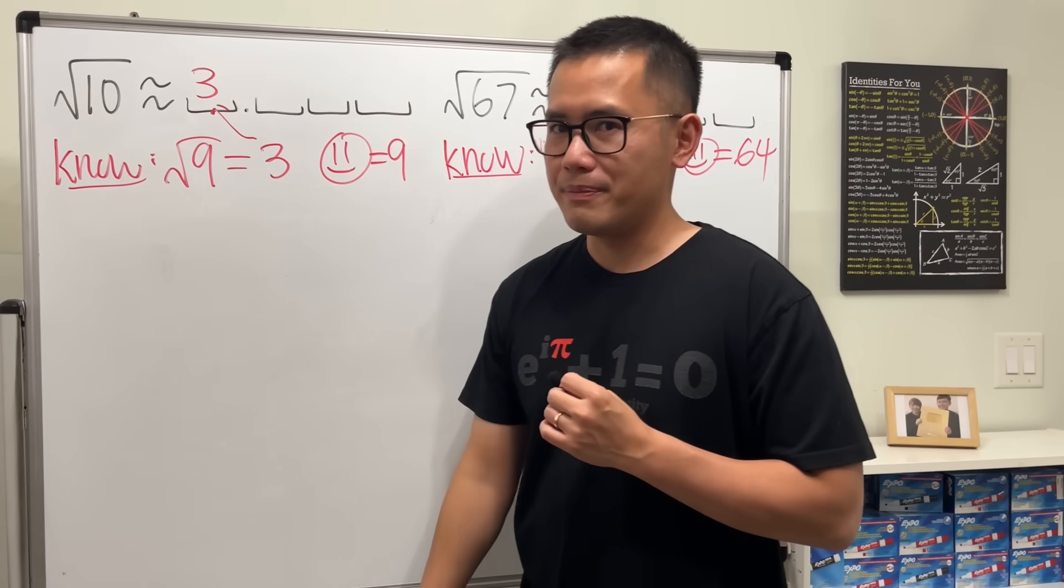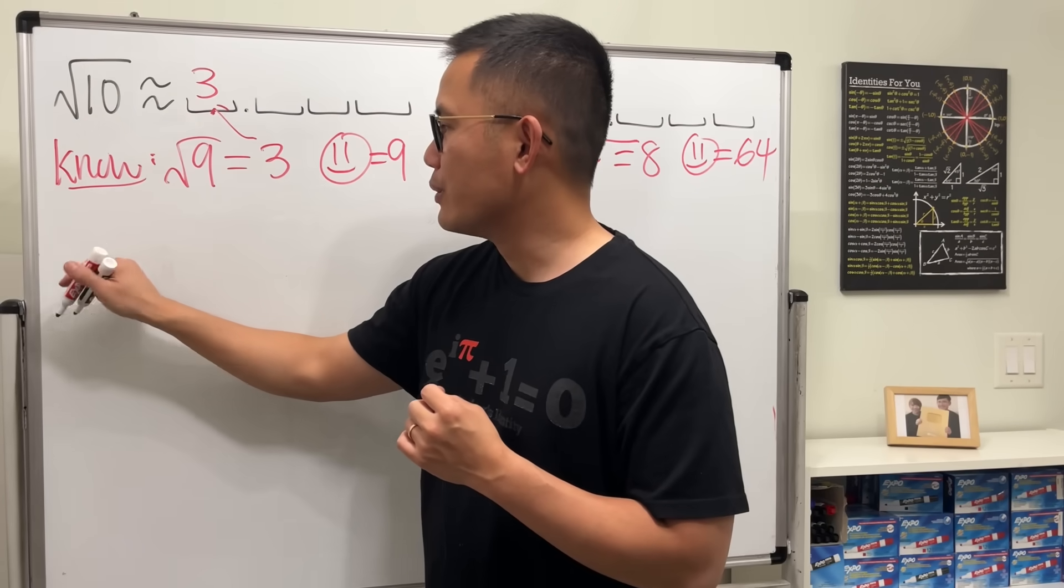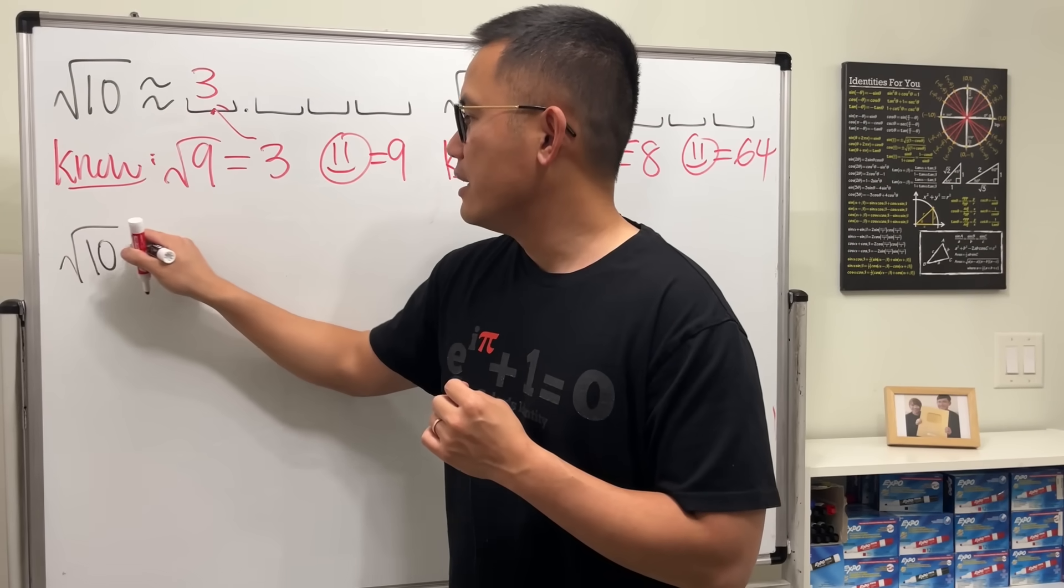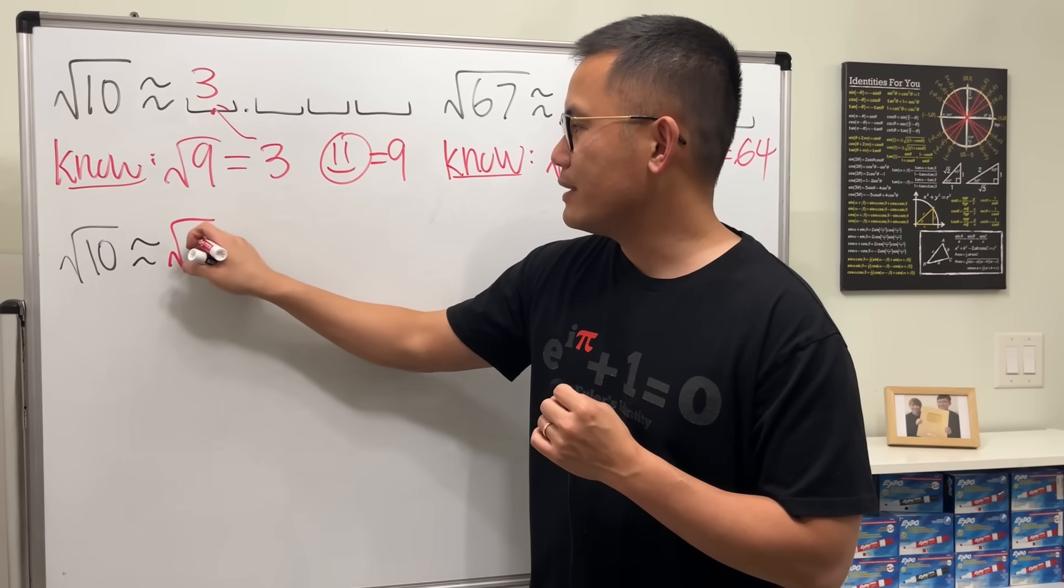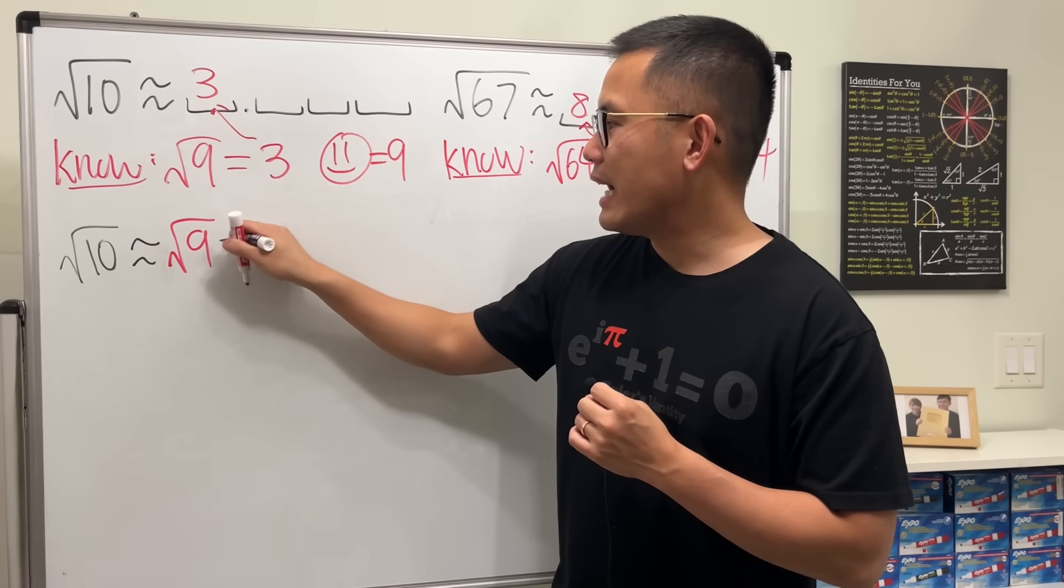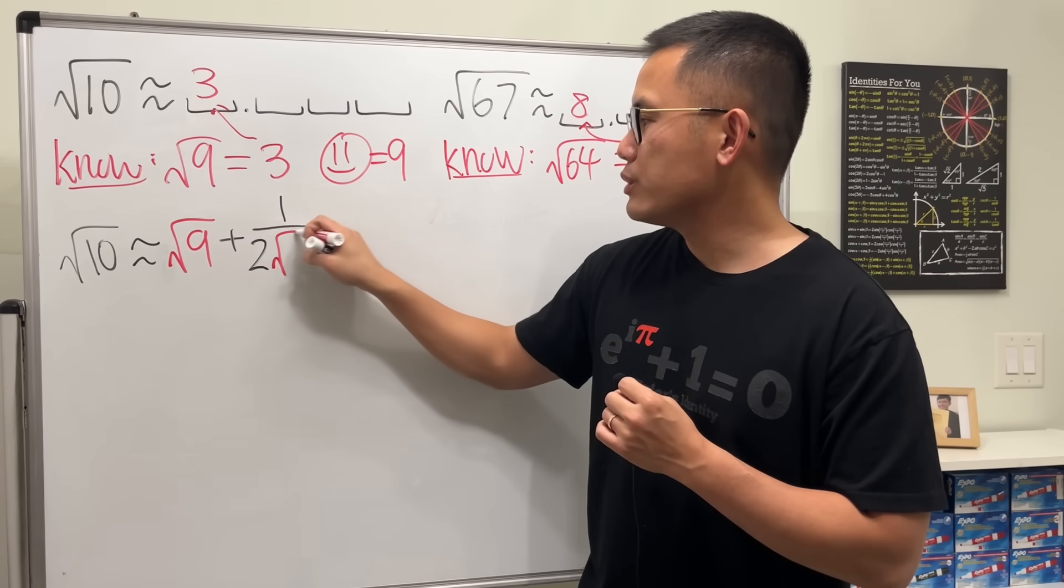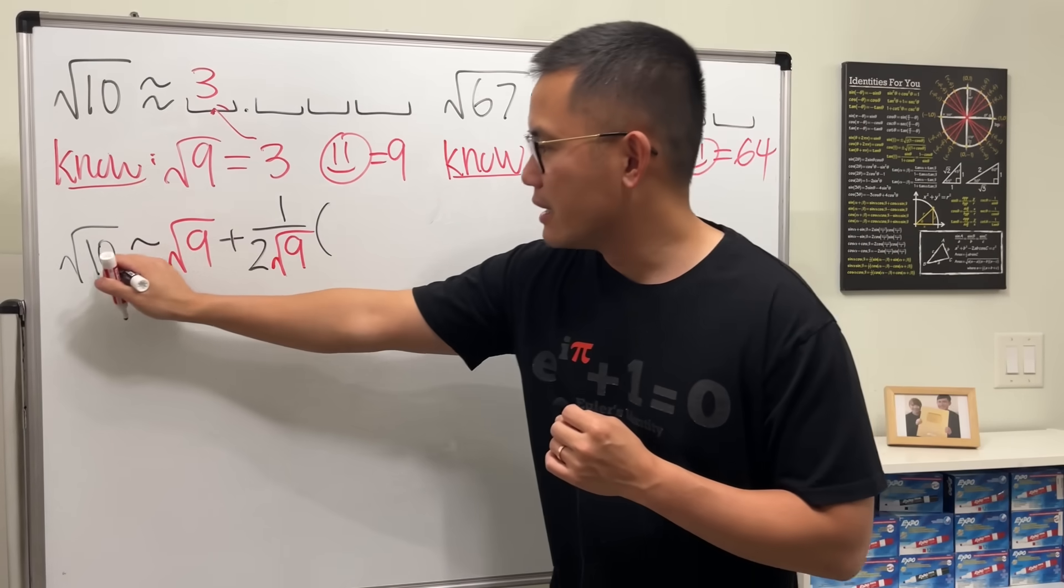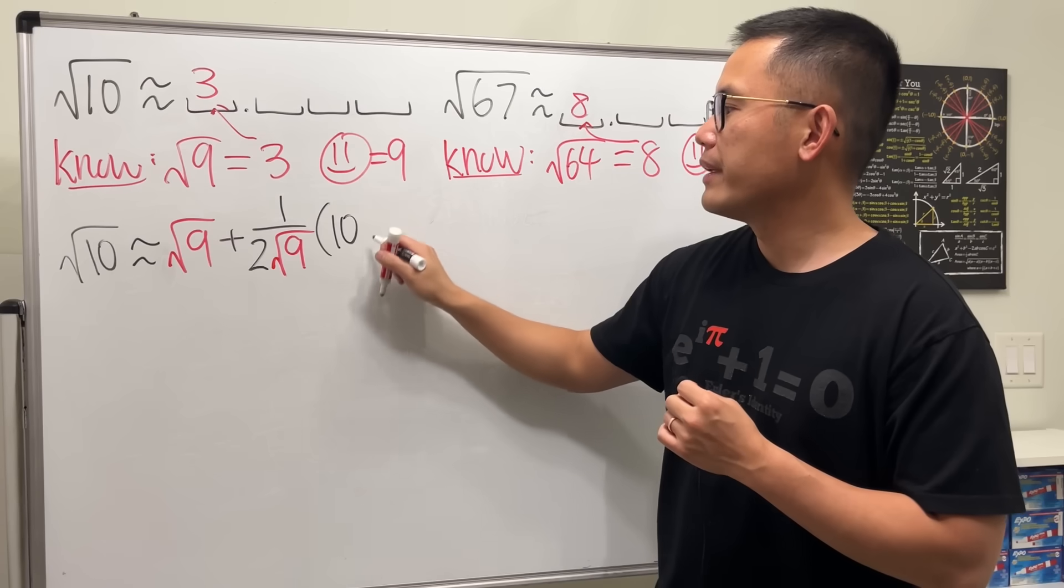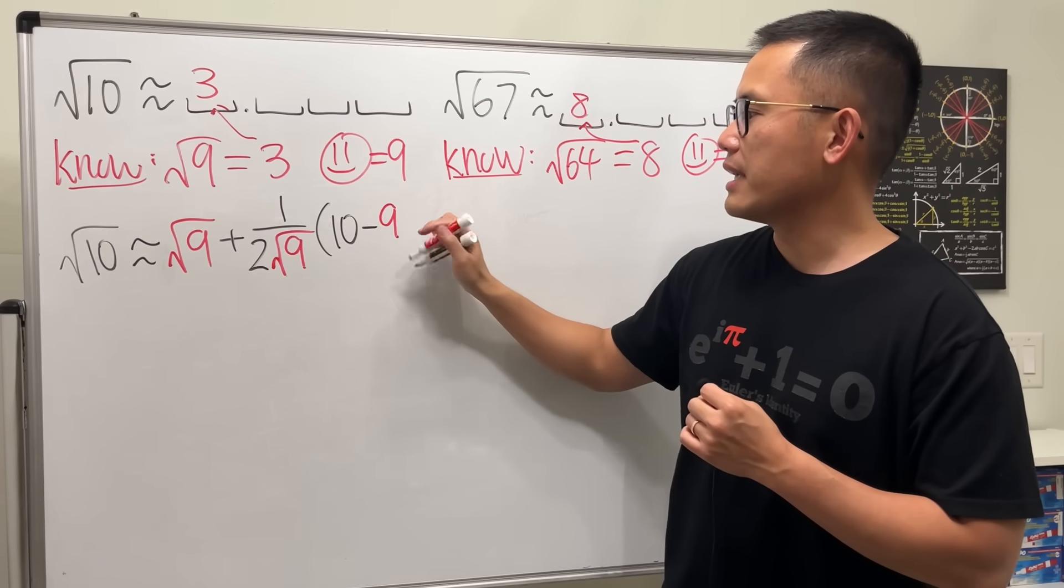Because for square root of 10, ready? I will tell you, square root of 10, it's going to be approximately equal to square root of the happy face, which is the 9. And then we add 1 over 2 times square root of the happy face, which is the 9. And then we multiply by, here we have 10, just 10, and then minus the happy face, which is 9, like this.